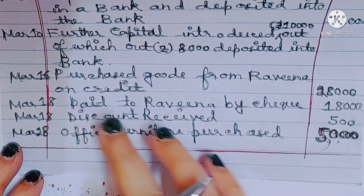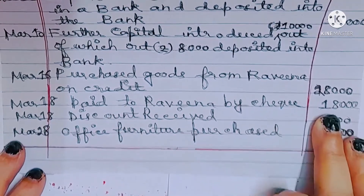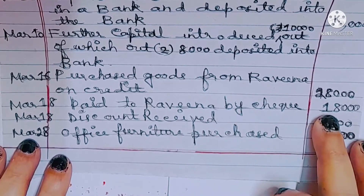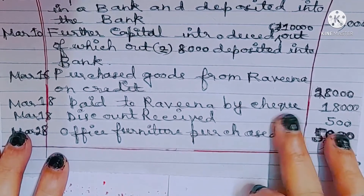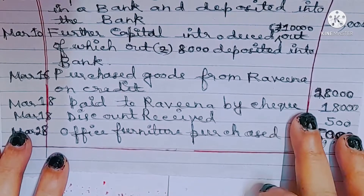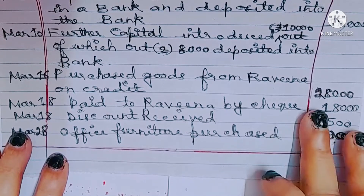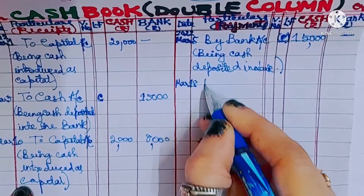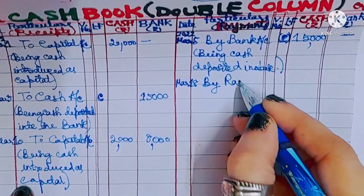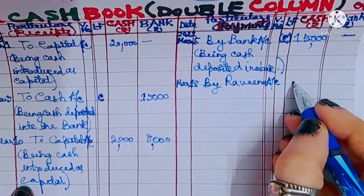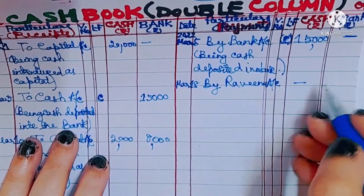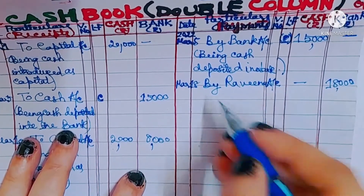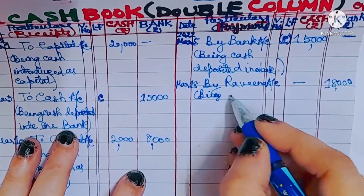The next transaction is on 18th March: paid to Raveena by check 18,000. The journal entry: Raveena account debit to bank account 18,000. Since bank account is on the credit side, we write 'By Raveena Account' in the cash book on the credit side in the bank column — 18,000. Narration: being check paid to Raveena.